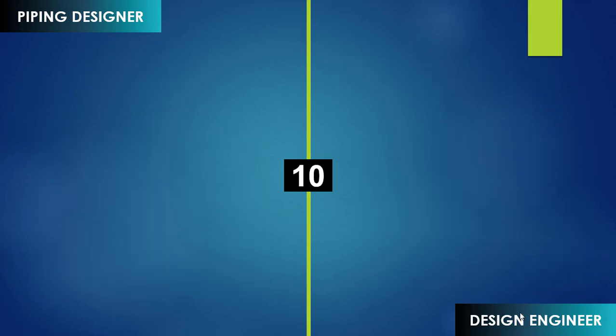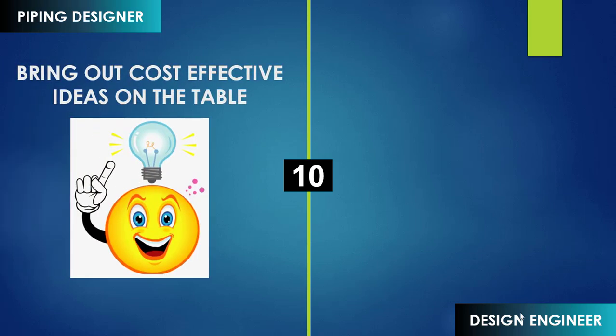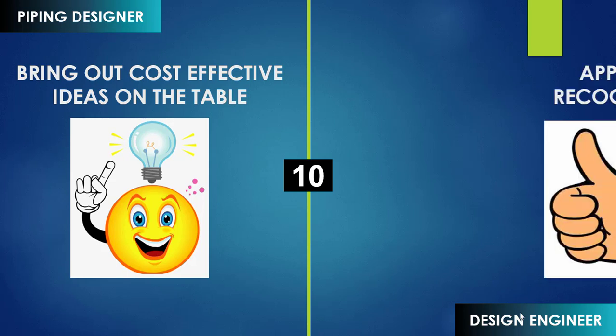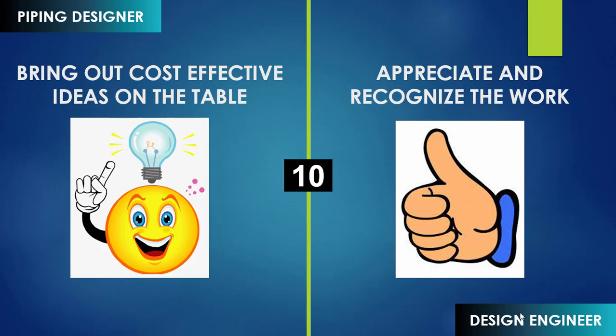The last and very important point for both designers and design engineers: the designer's major responsibility is to come out with cost-effective ideas on the table. If they sit back and wait for the design engineer to give each and every small instruction, it will create a rift between designer and design engineer, making it impossible to take the project further. At the same time, the role of the design engineer is to appreciate and recognize the work done by designers. If you don't appreciate the designer, they won't help you with different ideas that can make your work easier. Please keep this point as it is very important for having a frictionless working atmosphere.